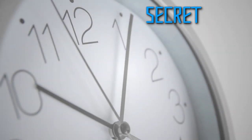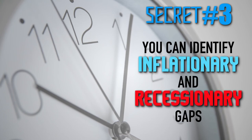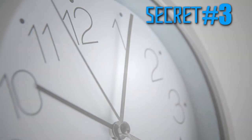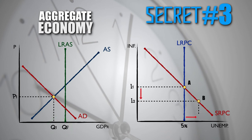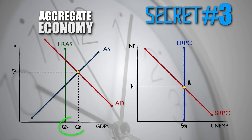Secret number three. You can identify inflationary and recessionary gaps on the combined graph for the short-run and long-run Phillips Curves. The long-run Phillips Curve represents the economy's natural rate of unemployment. So, if an economy is experiencing a recessionary gap, it can be visualized by a point along the short-run Phillips Curve to the right of the long-run Phillips Curve. If an economy is experiencing an inflationary gap, it can be visualized by a point along the short-run Phillips Curve to the left of the long-run Phillips Curve.